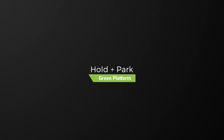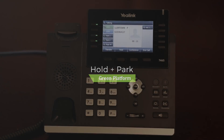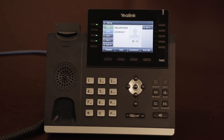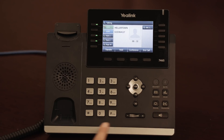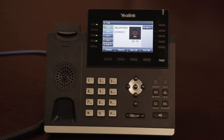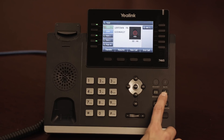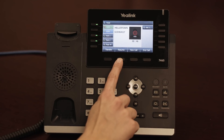While you're on a phone call, you have several in-call options available to you. The first of which is hold. To place your caller on hold on your phone only, you can either use the function key on the bottom right or you can use the soft key. This places the call on hold on your phone set only. To resume the held call, either press the function key marked with the word hold or press the resume soft key.